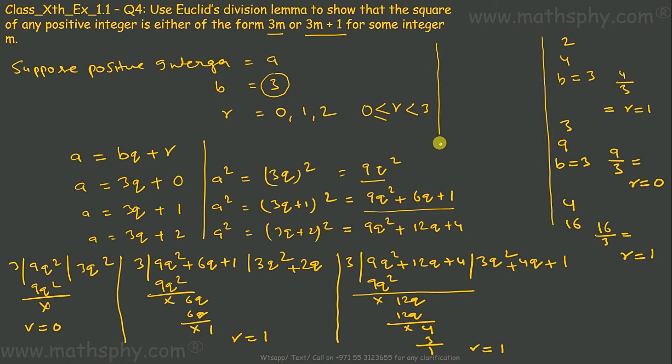The square of any positive integer—here the positive integer I have taken as A—when divided by 3, leaves some quotient M and leaves remainder which is either 0 or 1.